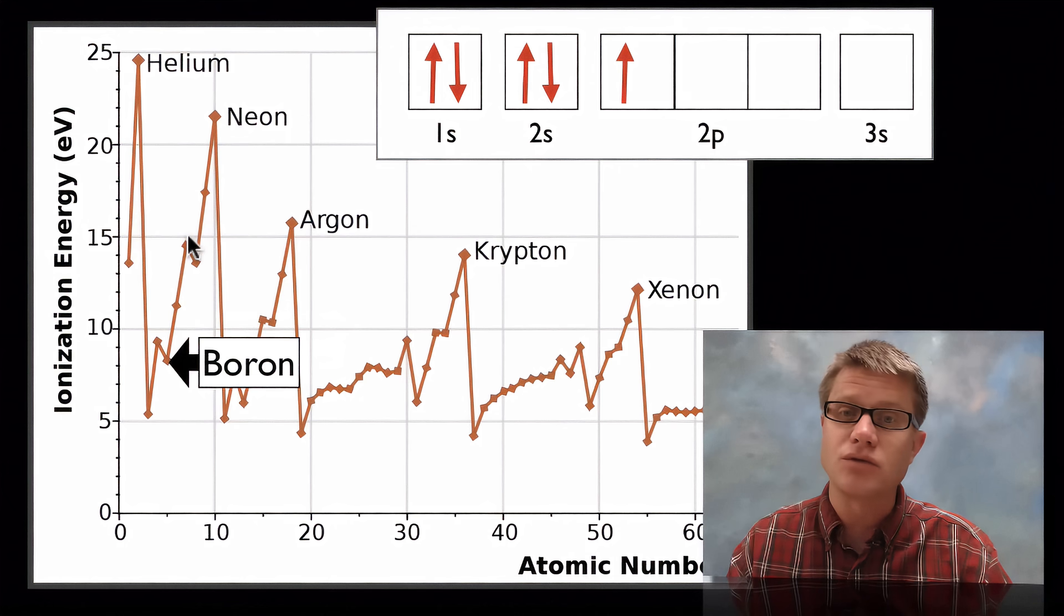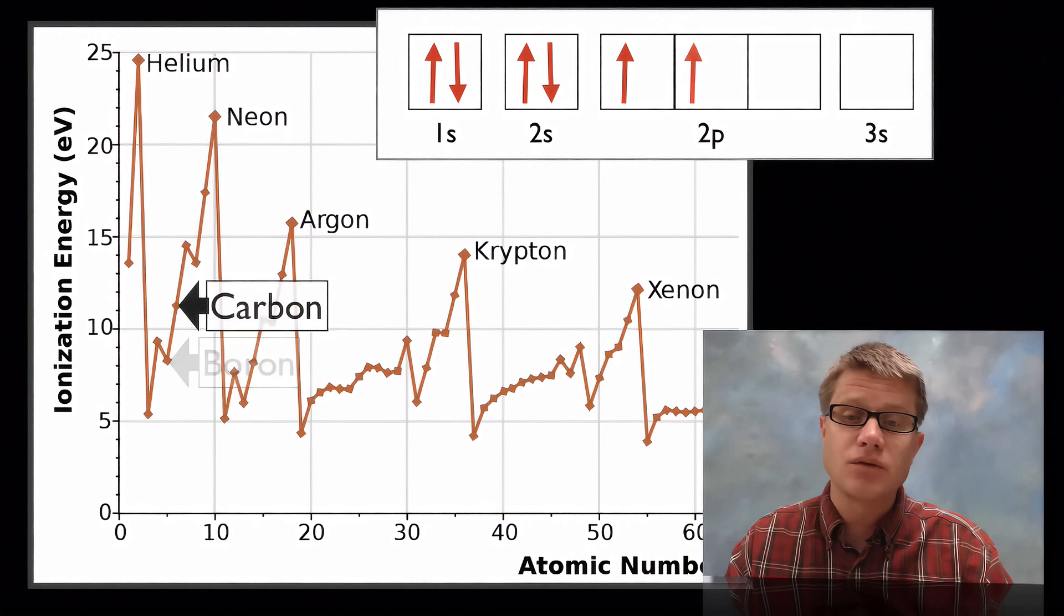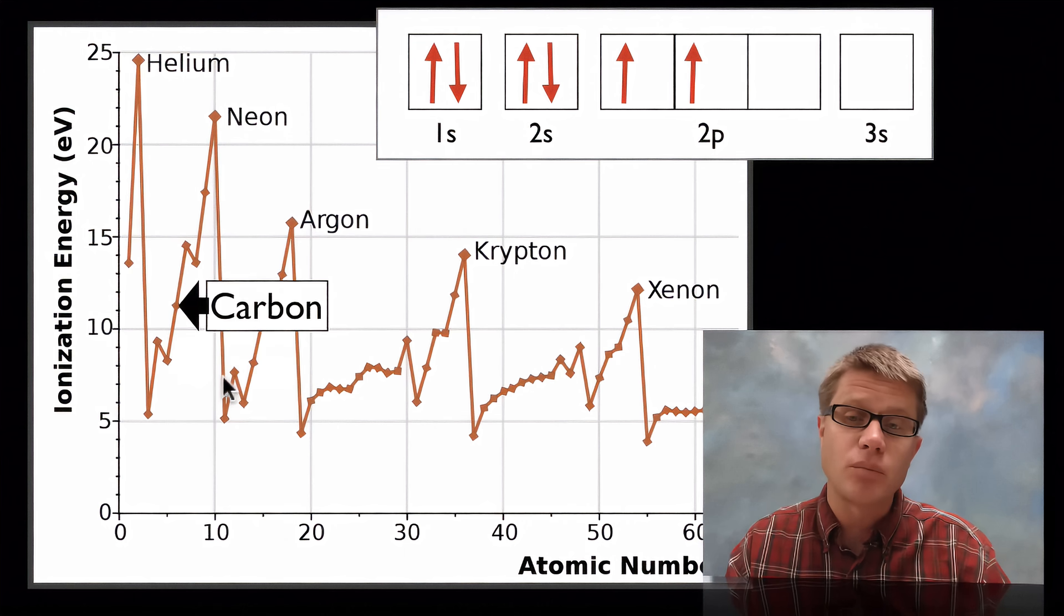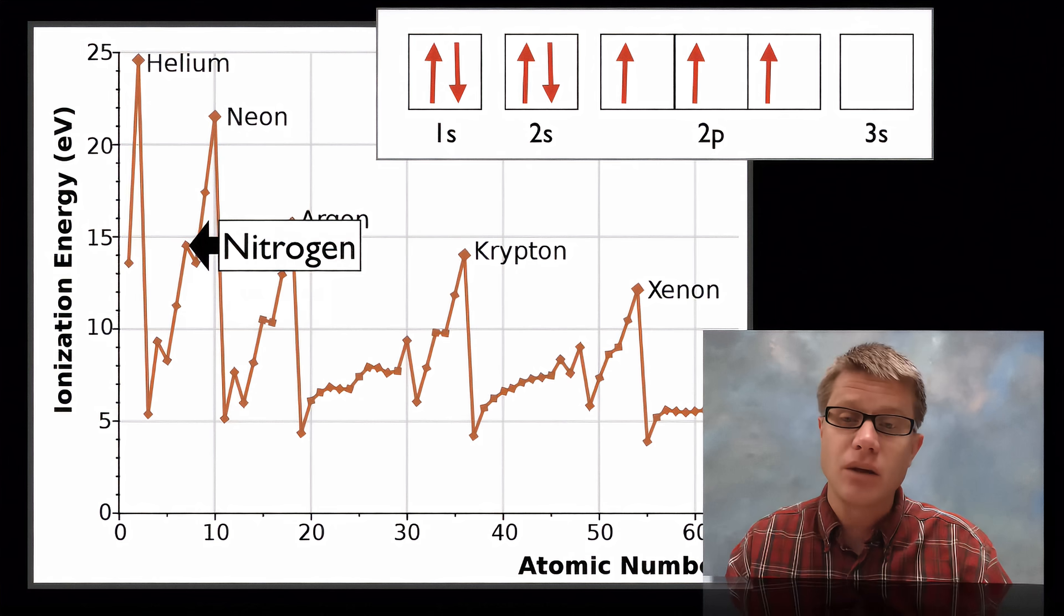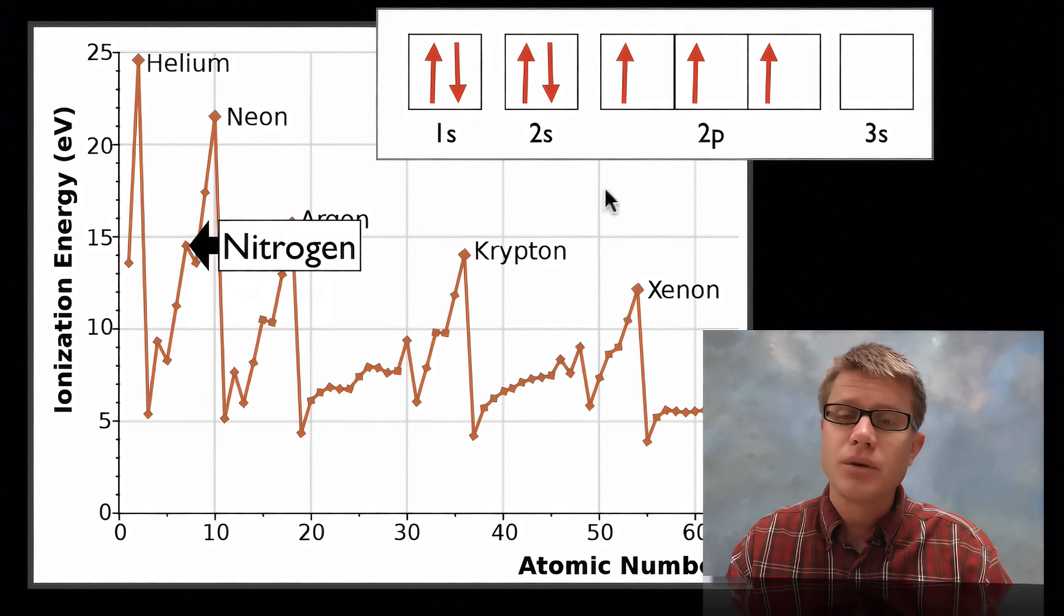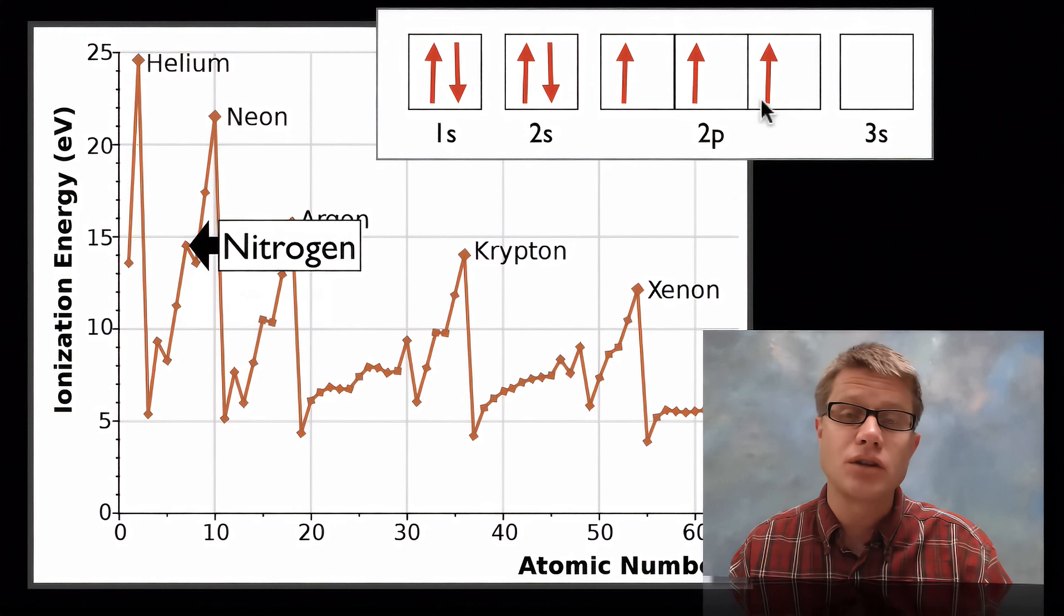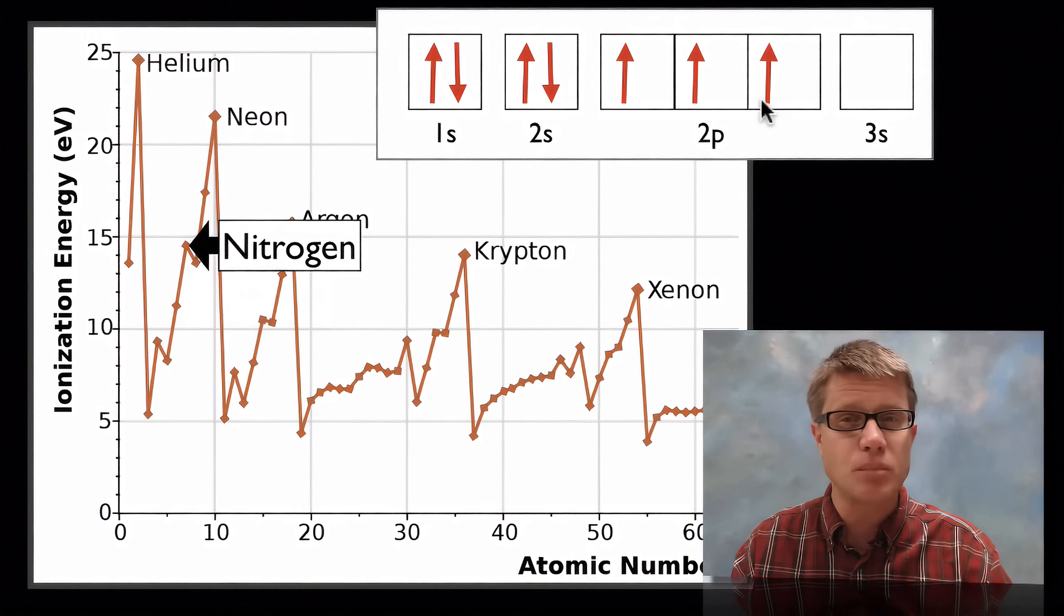But you can see we kind of have this jag as we move up. If we go to the next one, that makes sense. Carbon is going to have more ionization energy. We're adding more protons. Nitrogen, same way. But now let's look at this. Why does the ionization energy go down after we leave nitrogen? Well the reason why is that these electrons are added one at a time in each orbital. But they'll have a specific spin.